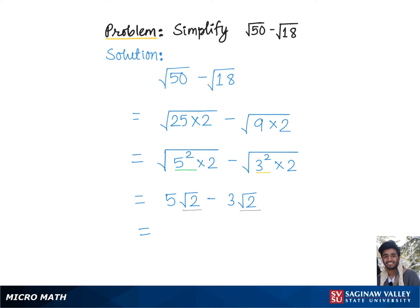these radicals. So here, 5√2 minus 3√2 would be simply 2√2, which is the final answer.